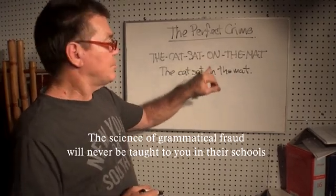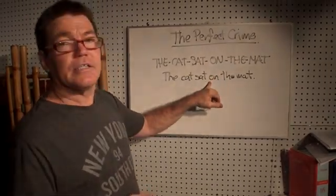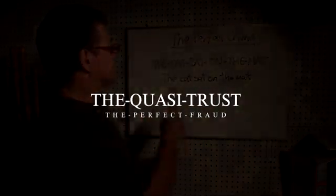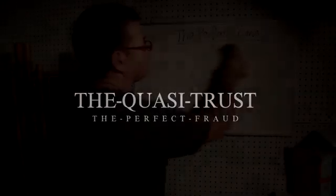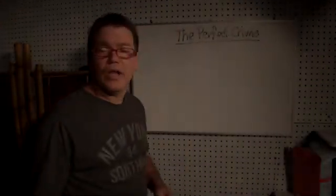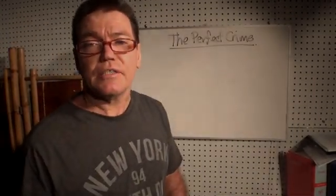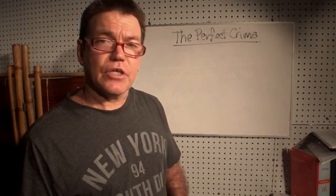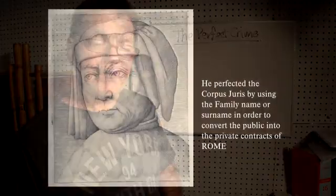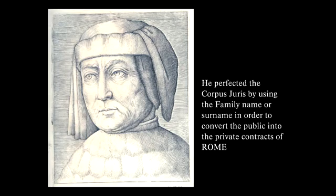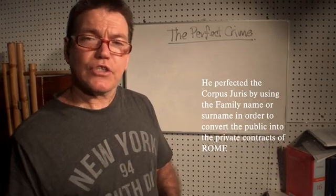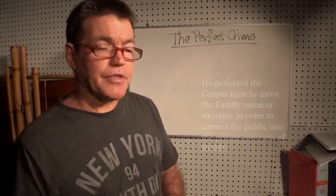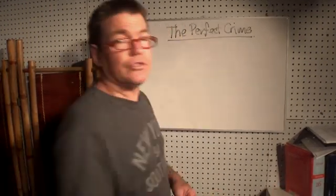So when you know the truth, you can detect a lie. We have been lied to for thousands and thousands of years — especially since Accursius in 1230 AD, when they created the Corpus Juris, which is a quasi-trust law system.